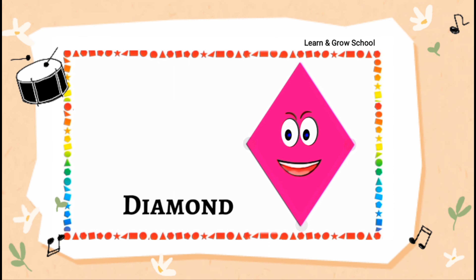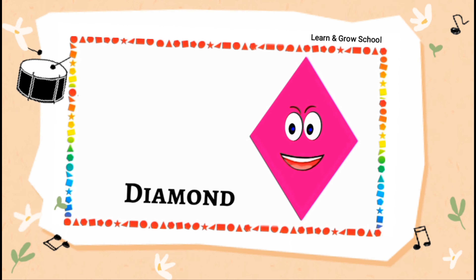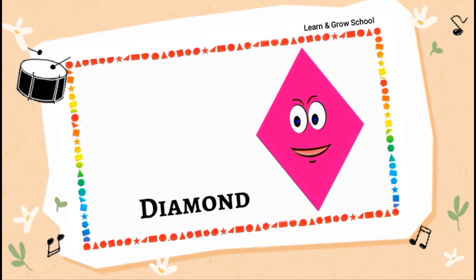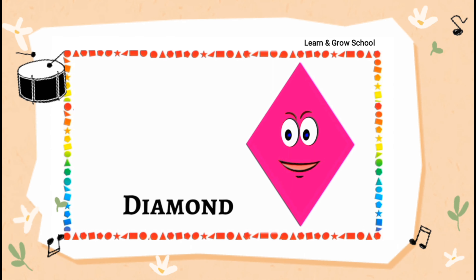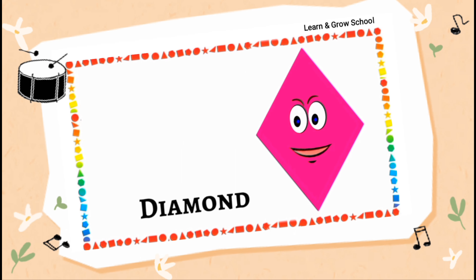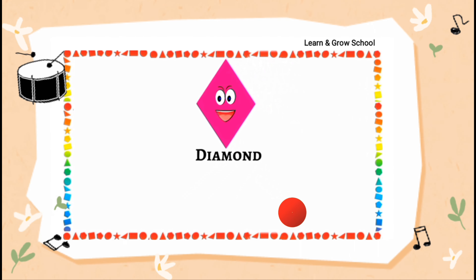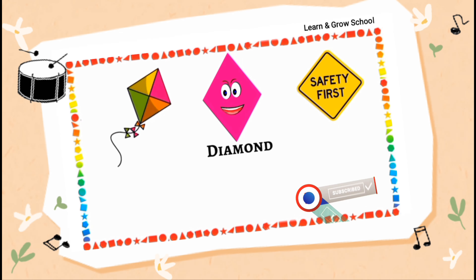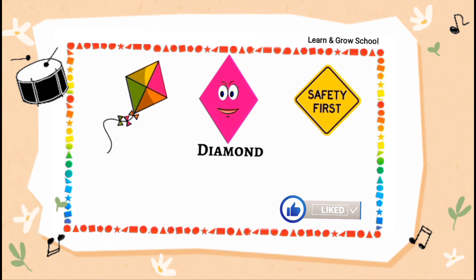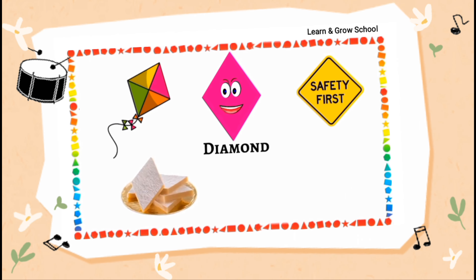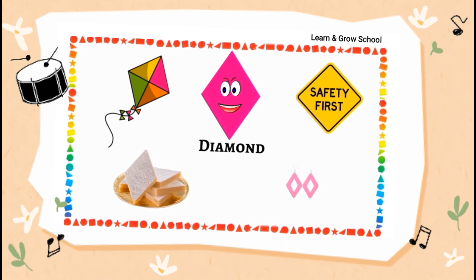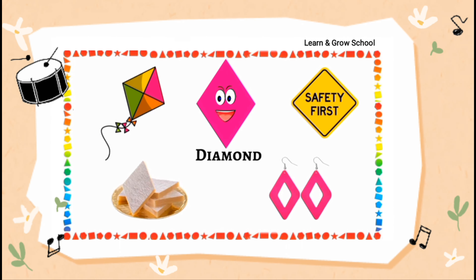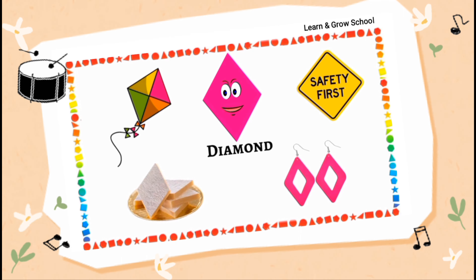My four sides and four corners make me a diamond. You can find me in many objects around your surroundings. For example, you can see me as a sign board. You can fly me as a kite. You can relish me as a sweet. You can wear me as jewelry. All these objects can be seen in the shape of a diamond.